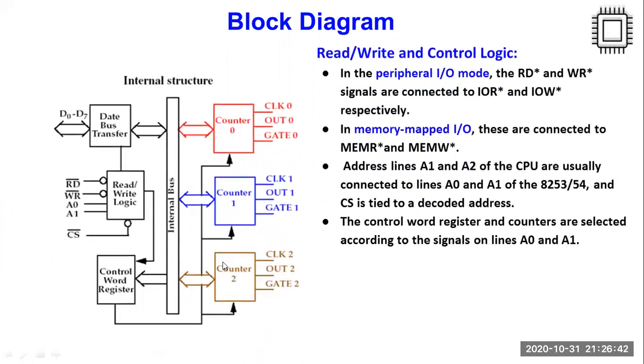The second important block is your read-write logic where we have read-write signals given from the processor. Whenever the processor wants to read a specific count value from the counter or what is the current status of the counter, a read signal is given by the processor. Whenever the processor wants to write anything into any of the counter or maybe a control word register, your write signal is issued by the processor on this specific pin. Lines A0 and A1 are connected to A1 and A2 of the processor, keeping in mind A0 line of the processor is reserved for banking.